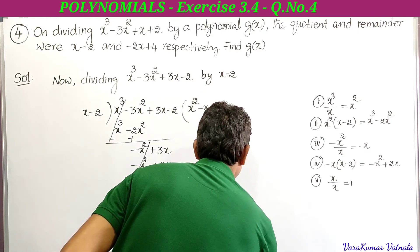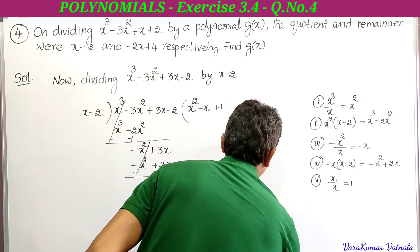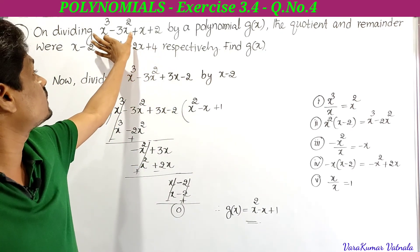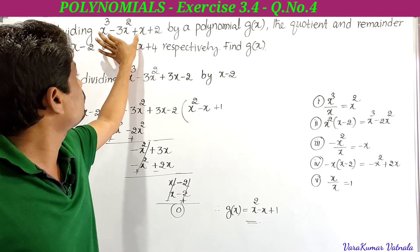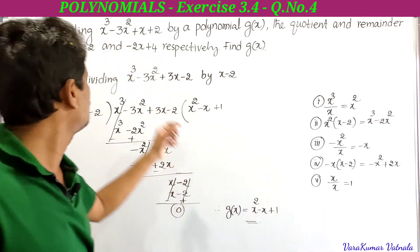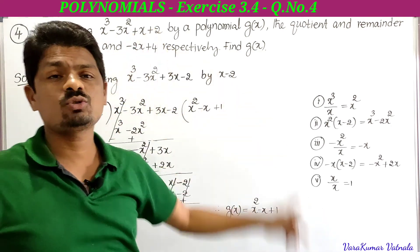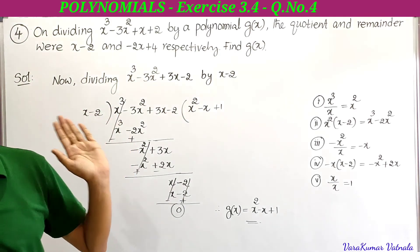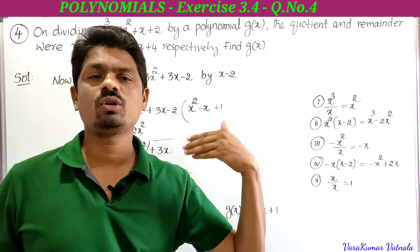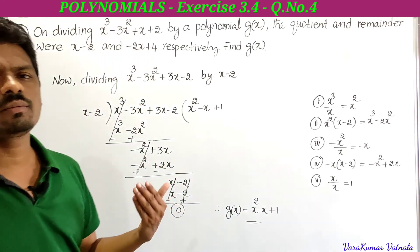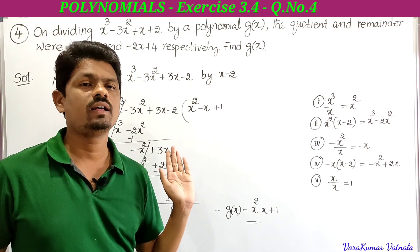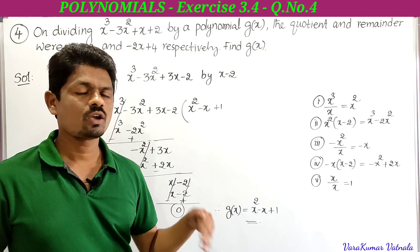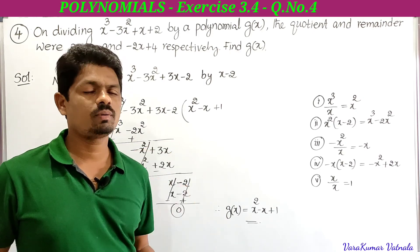Therefore g(x) = x² - x + 1. So he asked to find g(x), given x³ - 3x² + x + 2 divided by g(x) gives quotient x - 2 and remainder -2x + 4. Remember the division algorithm: p(x) = g(x)·q(x) + r(x), or dividend = divisor × quotient + remainder. This was the fourth problem of exercise 3.4. Thanks for watching!